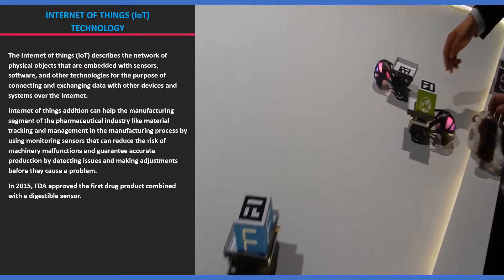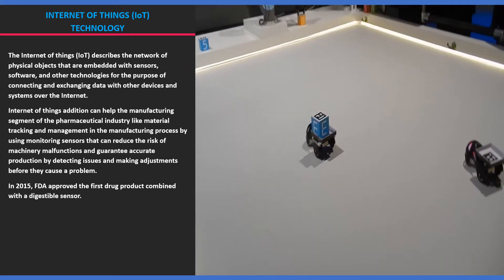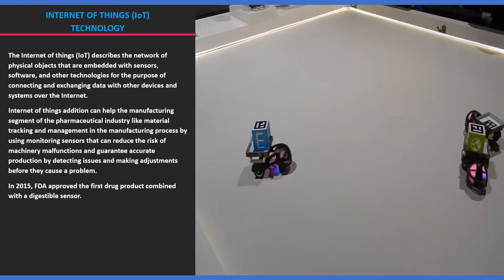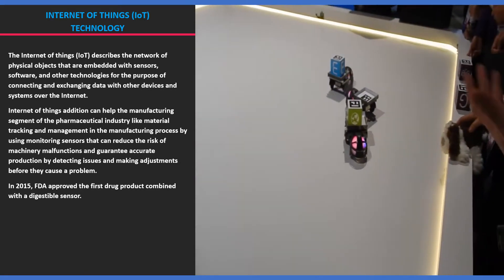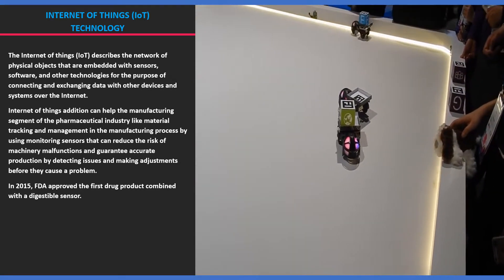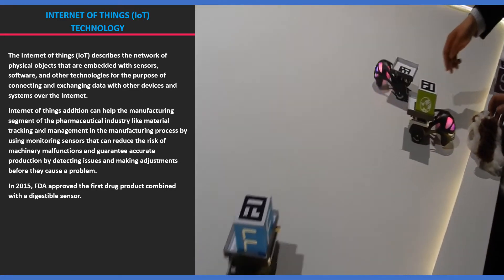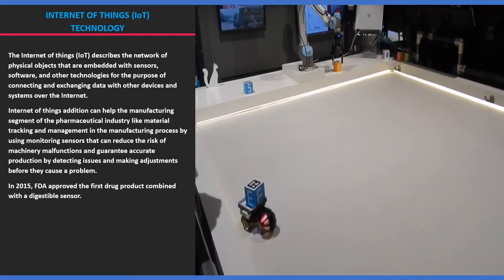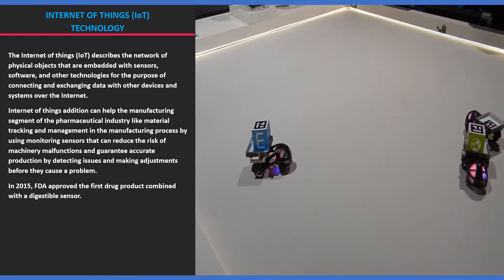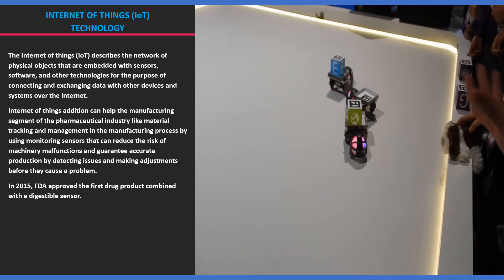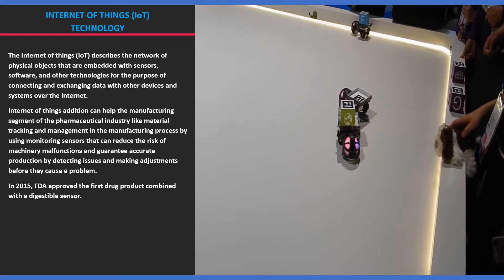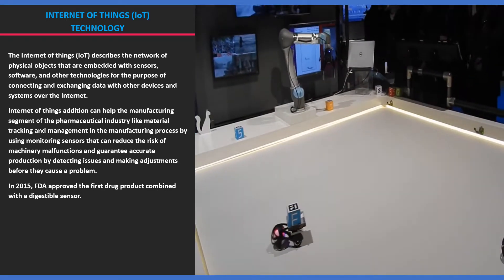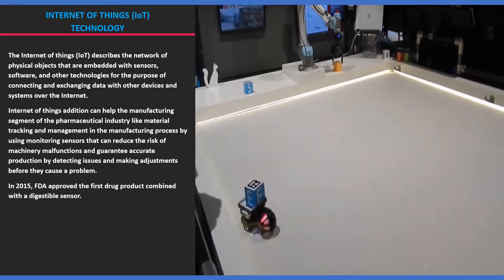The next technology is the Internet of Things which describes the network of physical objects, things that are embedded with senses, software, and other technologies for the purpose of connecting and exchanging data with other devices and systems over the Internet. Internet of Things addition can help the manufacturing segment of the pharmaceutical industry like material tracking and management in the manufacturing process by using monitoring sensors that can reduce the risk of machinery malfunctions and guarantee accurate production by detecting issues and making adjustments before they cause a problem.